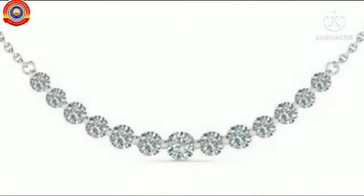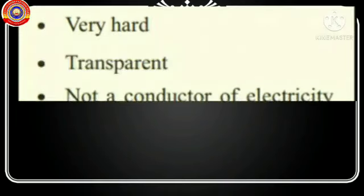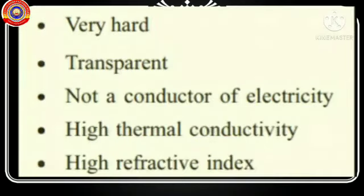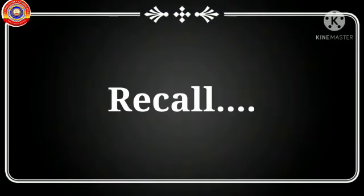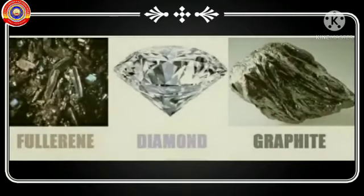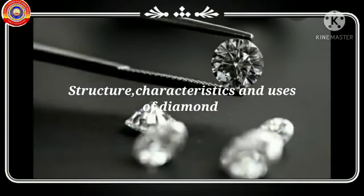That is why diamond is used to make ornaments. To consolidate: diamond is very hard, highly transparent, not a conductor of electricity, and possesses high thermal conductivity and high refractive index. Today we discussed allotropes of carbon and the characteristic features and uses of diamond. Hope you understood the structure, characteristics, and uses. Let's meet in the next class with another allotrope of carbon. Study well, thank you for watching.